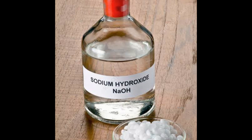A 33% lye solution of caustic soda is used in many household products. When we make soap or bathing soap, we use 33% lye solution. When we make dish wash gel, we also use 33% lye solution. It is also used in hand soap and many other products. That's why today I am showing you how to make it.